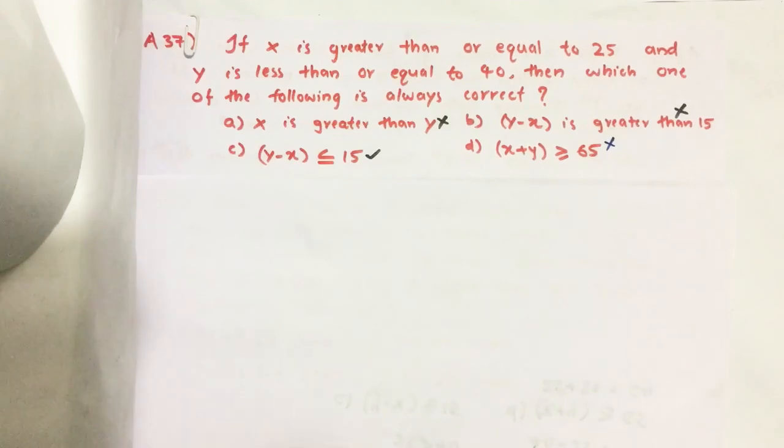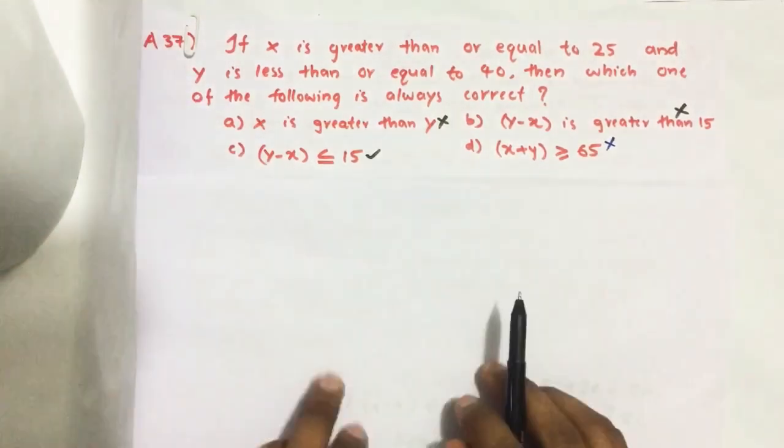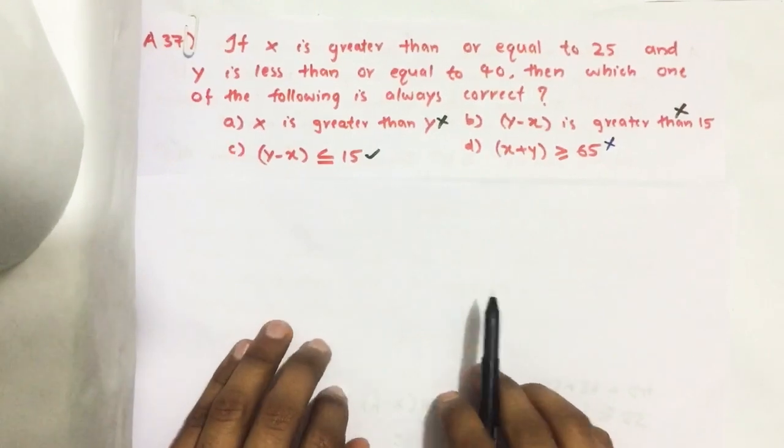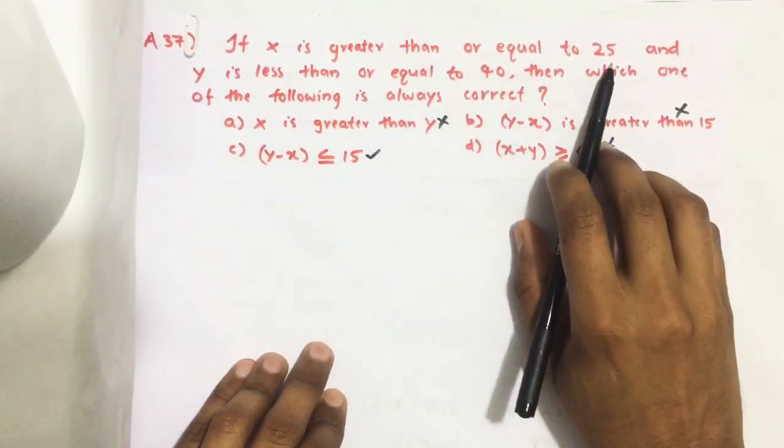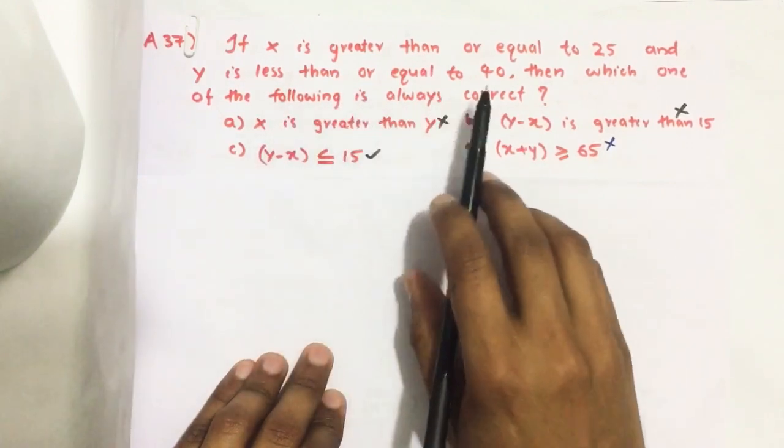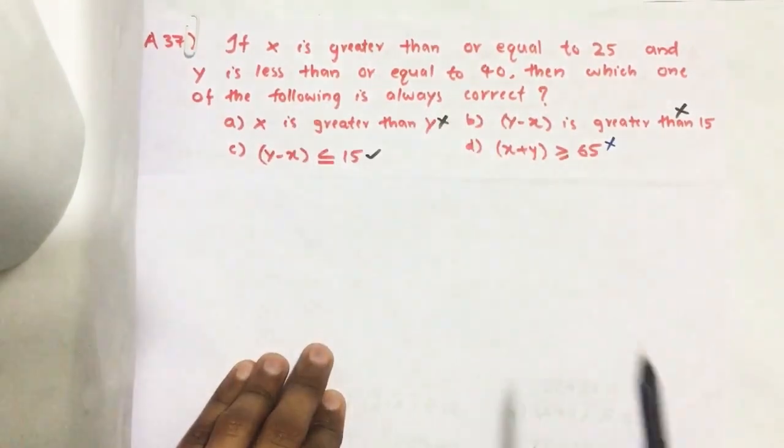Hello everyone, here I am going to solve 2019 CSAT question number 37 from question paper series A. If X is greater than or equal to 25 and Y is less than or equal to 40, then which one of the following is always correct?